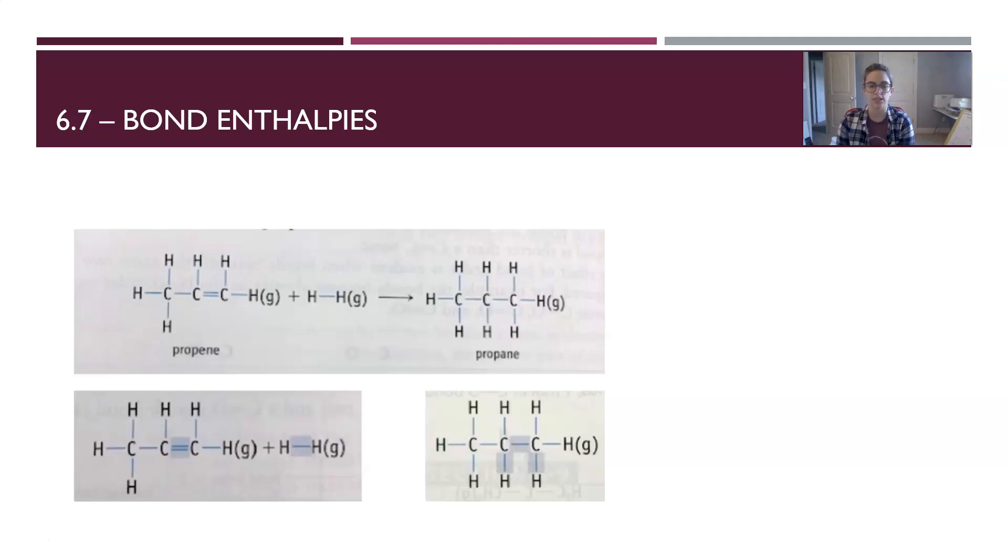The differences between propene and propane is that you break a carbon-carbon double bond and you break a hydrogen-hydrogen single bond. Then you form a carbon-carbon single bond and two carbon-hydrogen single bonds. For the purposes of time, we're going to focus only on those bonds that change, because the rest of the bonds are going to stay the same.